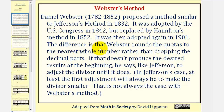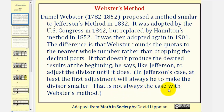The difference is that Webster rounds the quotas to the nearest whole number rather than dropping the decimal parts. If that doesn't produce the desired results at the beginning, he says, like Jefferson, to adjust the divisor until it does. It's important to note that in Jefferson's case, at least the first adjustment will always be to make the divisor smaller. This is not always the case with Webster's method.